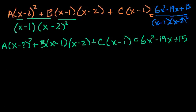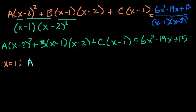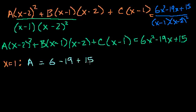Now we solve by picking values of x that make terms cancel. To solve for a, pick x = 1: the b and c terms vanish, leaving a(1-2)² = a·1 = a. So a = 6(1)² - 19(1) + 15 = 6 - 19 + 15 = 2.